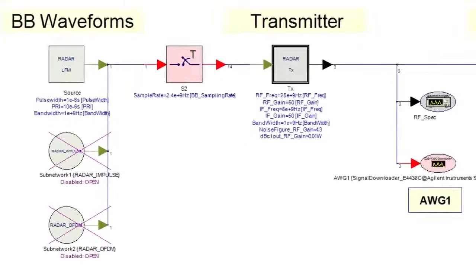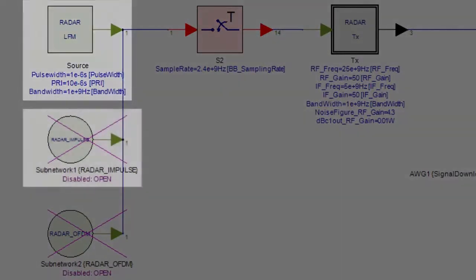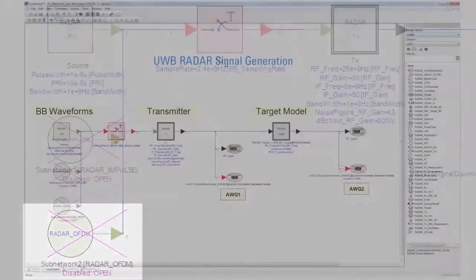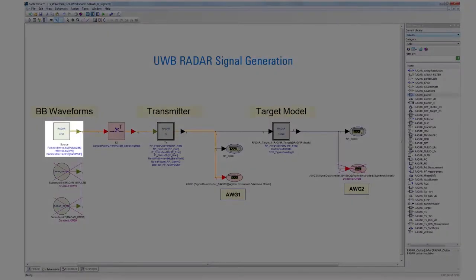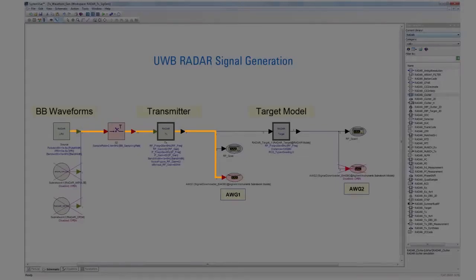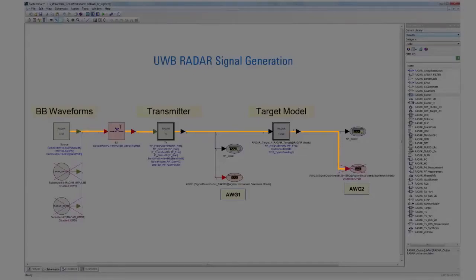In this SystemVue schematic, there are three UWB signal sources: LFM, impulse, and OFDM. The system is first simulated to verify the desired performance. Then the active source signal is downloaded to the 81180A via signal downloader AWG-1, in order to generate an unimpaired UWB transmitter signal used to test the radar receiver. The signal is then sent to a radar target model where characteristics such as velocity, range, and environmental effects will be added. The resulting signal is then downloaded to the 81180A via signal downloader AWG-2.